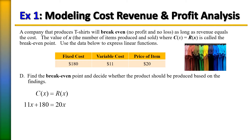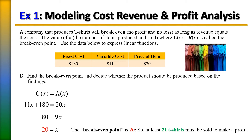To solve for x, we combine like terms by subtracting 11x from each side, then divide by 9, giving x = 20. So the break-even point is 20. This t-shirt company needs to sell at least 21 or more shirts to make a profit. Selling exactly 20 means they break even — no loss, no gain — but to make a profit they need to sell 21 or more.